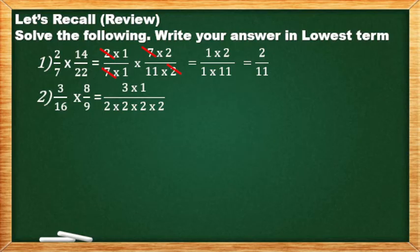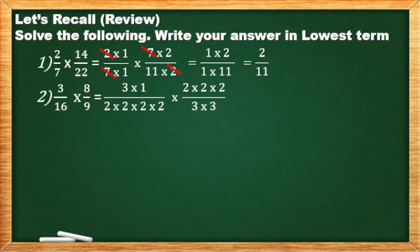Times, the prime factor of 8 is 2×2×2 — tatlong beses — which is 2×2=4, times 2=8. All over, the prime factor of 9 is 3×3.